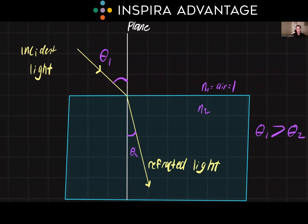So what does this equation mean? Well, the equation is stating that the product of the index of refraction of the first material, N1, and the sine of the angle of incidence, sine theta1, is equal to the product of the index of refraction of the second material, N2, and the sine of the angle of refraction, sine theta2.